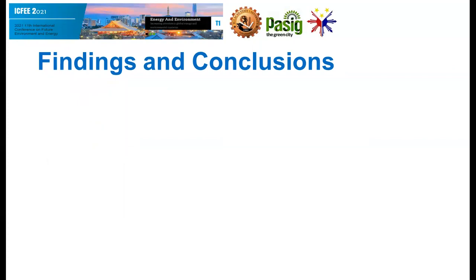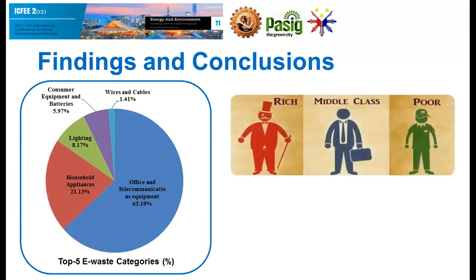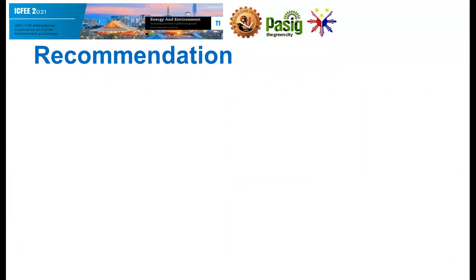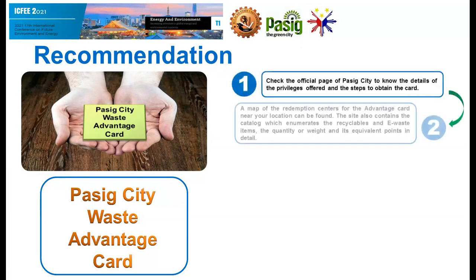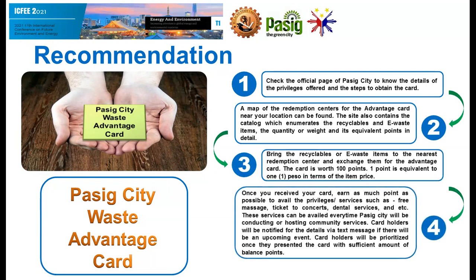After conducting the e-waste categorization, the top e-waste categories comprising the solid waste of Pasig City were determined, with breakdown of each composition shown on the slide. Based on the results, income is a great contributor to e-waste generation behavior, with middle income class households contributing significantly. With the determination of the top five e-waste categories, a recommendation was proposed: the Pasig City Waste Advantage Card, where consumers can exchange their e-waste into points stored in a card usable as a privilege card — prioritizing cardholders in some city offices, and offering services such as massage, health checkup, concert access, and more.